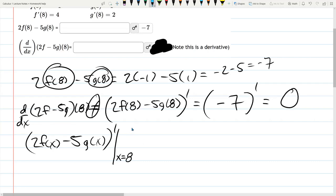And this symbol right here, this vertical bar, means evaluate at x equals 8. And because it's outside the derivative, it means do the derivative first and evaluate this second. So that's exactly what I'm going to do. Take the derivative first and evaluate this second.